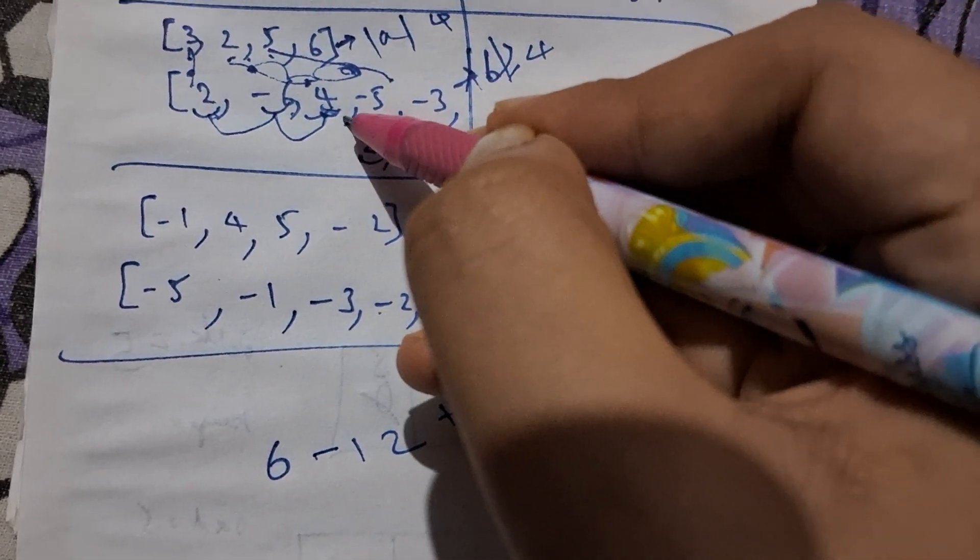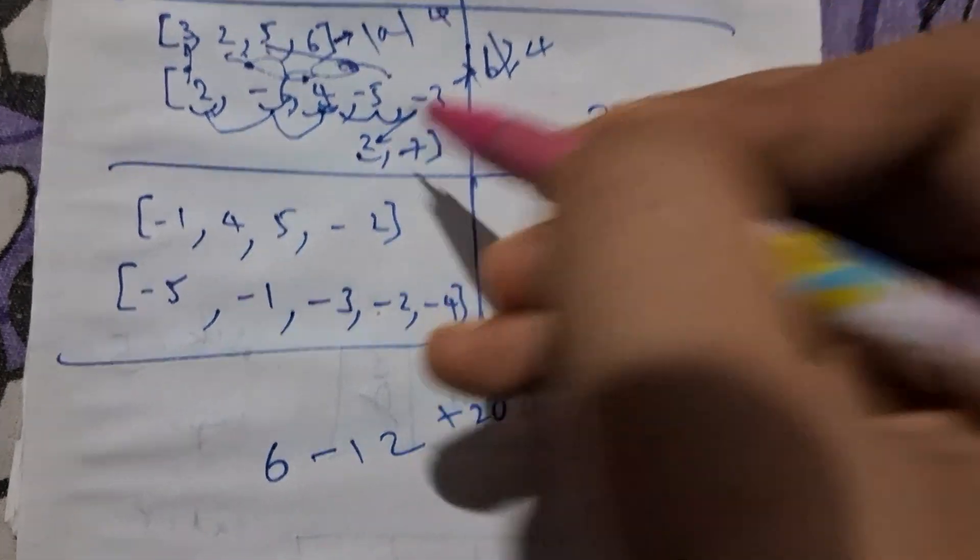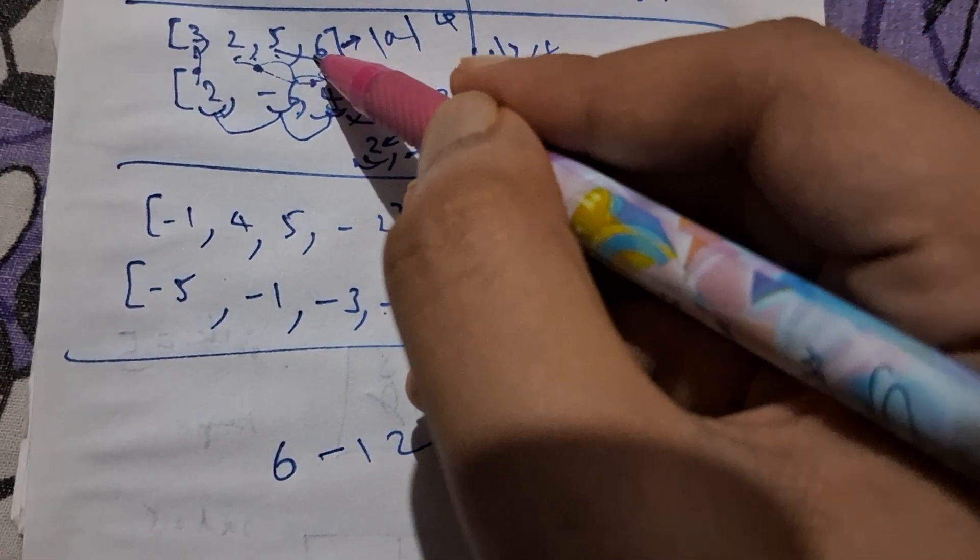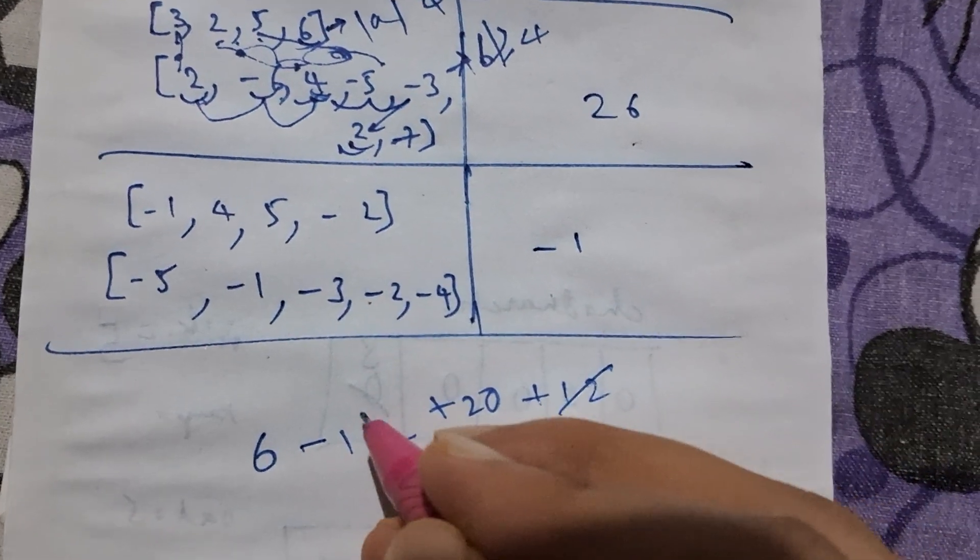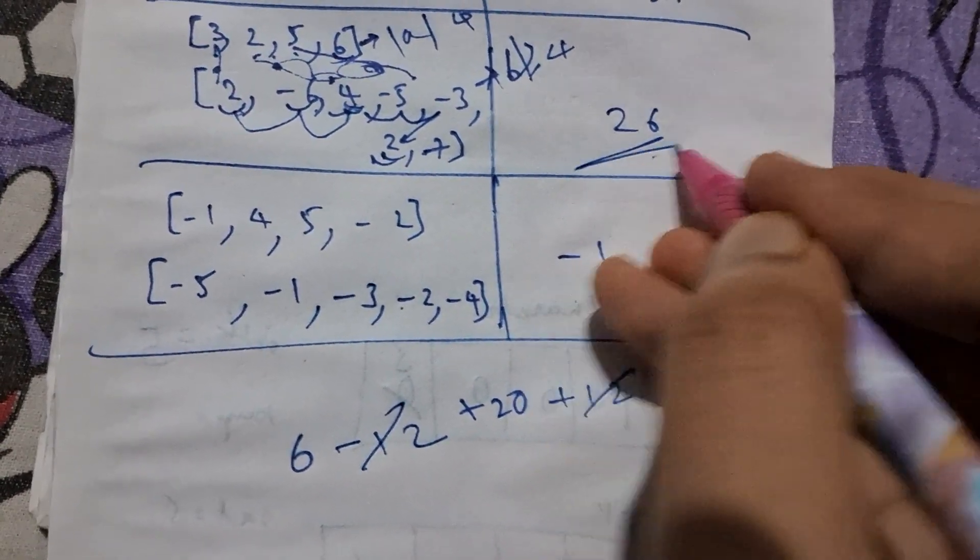And then we are taking 2. If we are taking 2 and there is 6, so that is 6 into 2, that is 12. This 12 and 12 cancels out and then it becomes 26, so that is the answer.